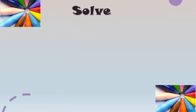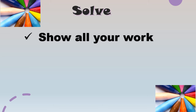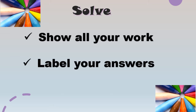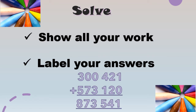This next step is very important: Solve. Show all working and label your answers. Here is an example of how to label your answers. Johnny has 300,421 red crayons and 573,120 blue crayons. How many crayons does he have in all? He has 873,541 crayons.